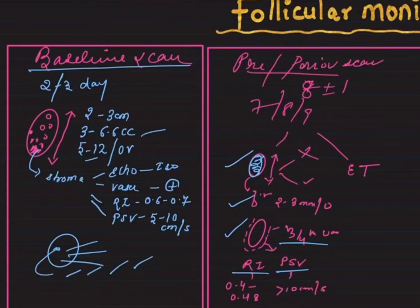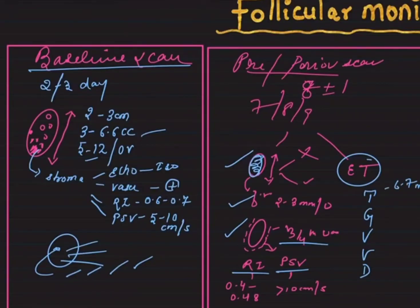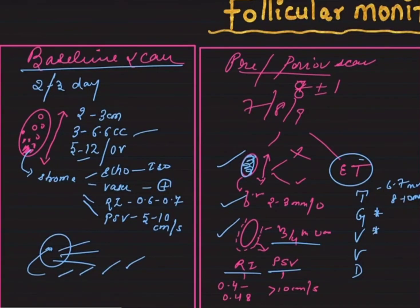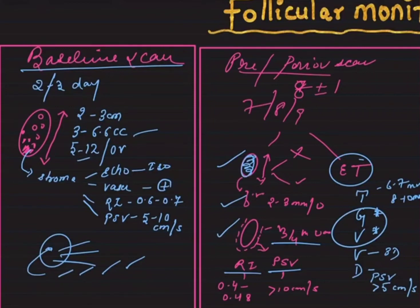The other thing we assess in the pre-periovulatory scan is the endometrium. We evaluate: the thickness — minimally achievable is 6 to 7 mm, with ideal being 8 to 10 mm; the grade of the endometrium; the vascularity; the volume, calculated on 3D ultrasound; and Doppler indices. The PSV of endometrial vascularity should be more than 5 cm/sec.